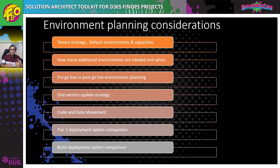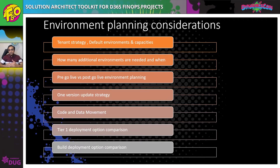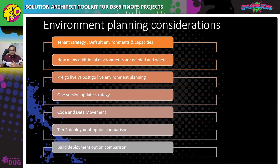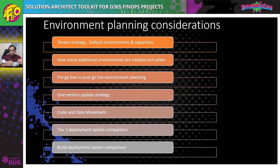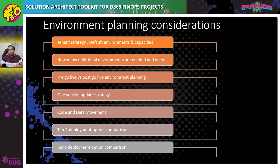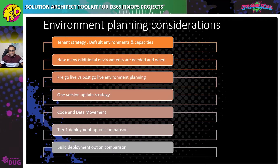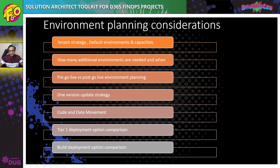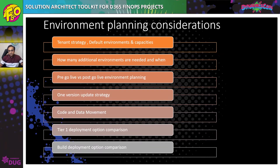Once you understand your default capacity, plan how many additional environments you need further down the line. For example, after your development phase you might need a system integration testing environment and a user acceptance testing environment running in parallel — but you may not need them from the beginning of the project, only towards the end. Also consider your post-go-live environment planning, as you need an environment to service the production environment. Capture how you will move code and data across environments and how packages will be built.